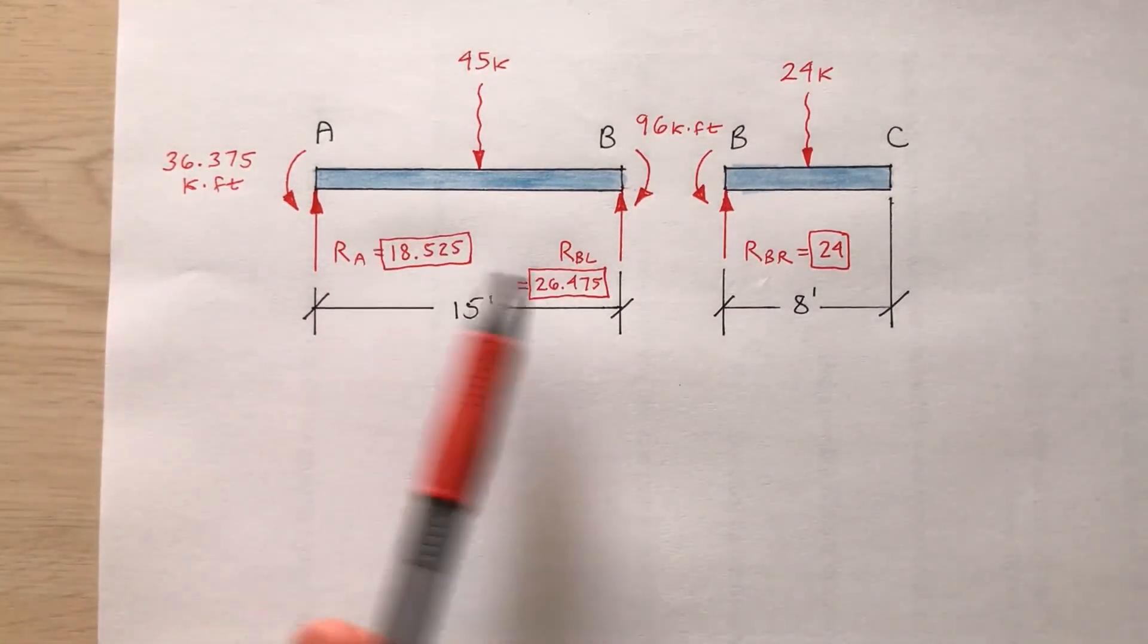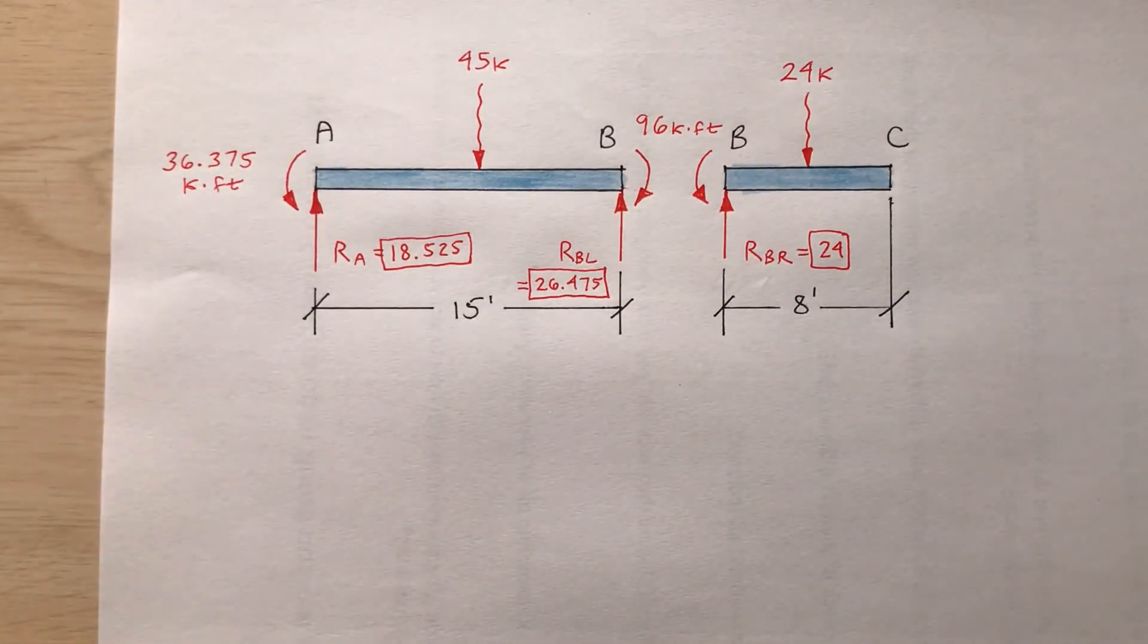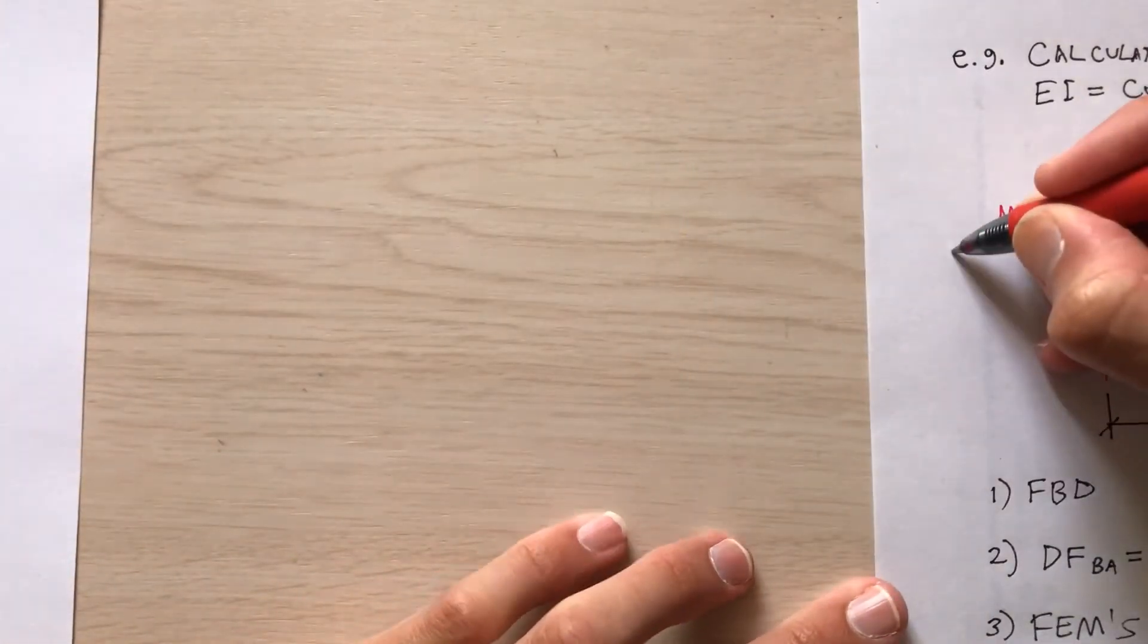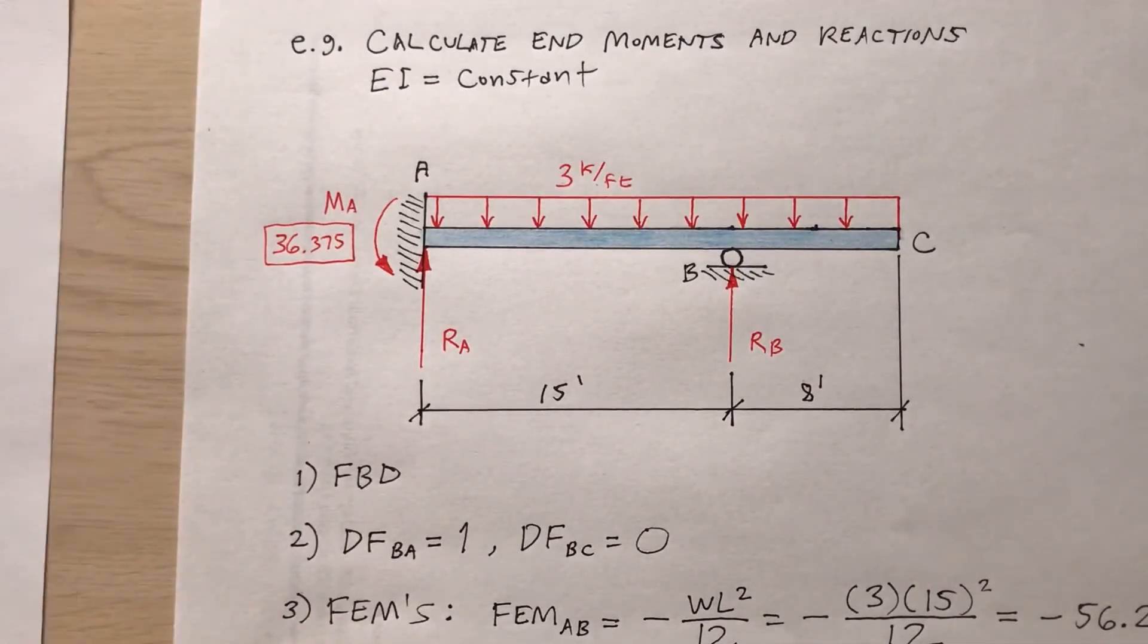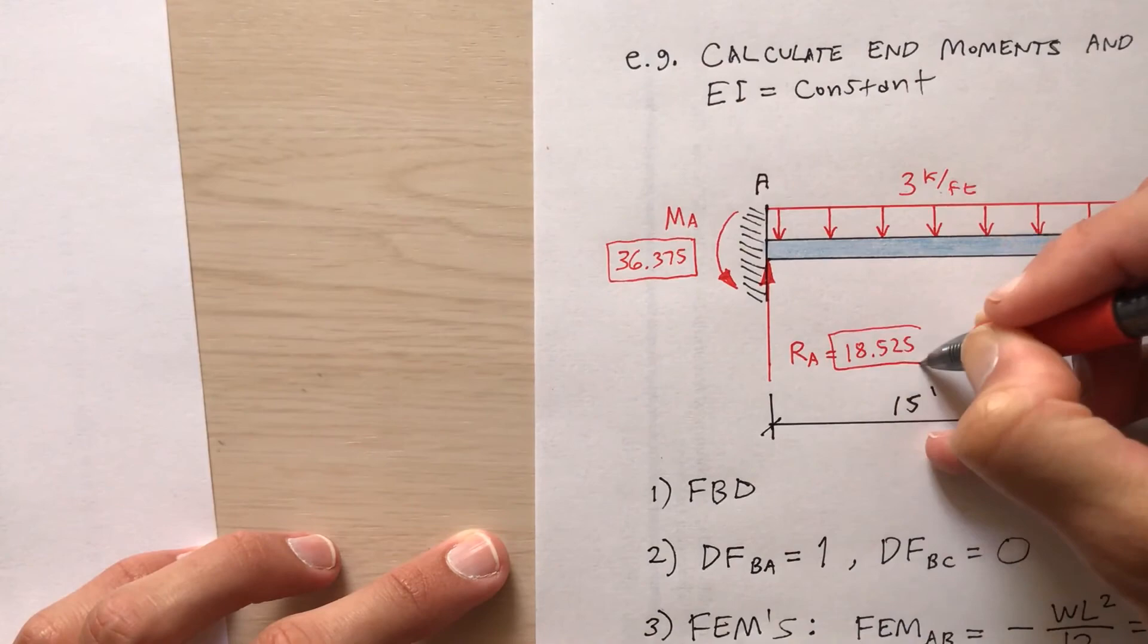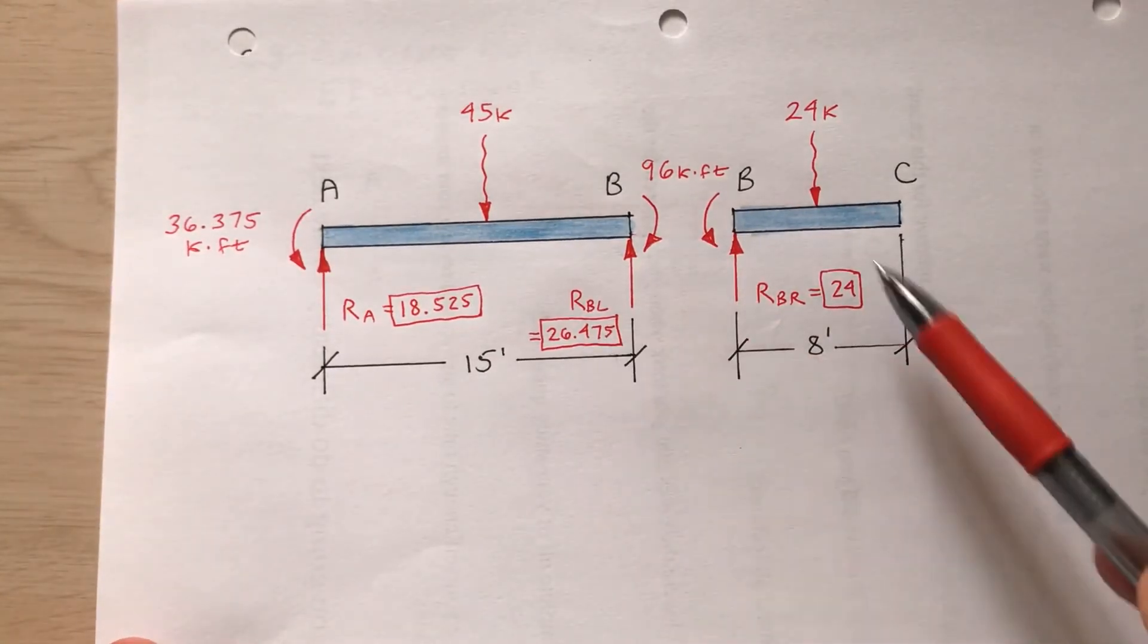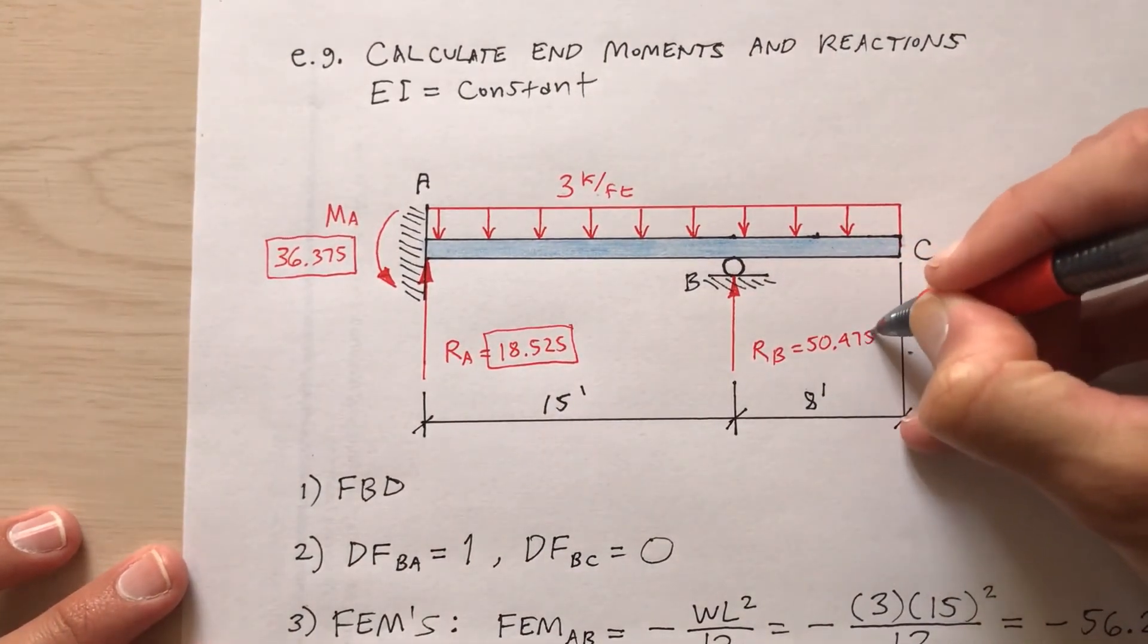Once I find R sub BL, then I'd add whatever that is to 24 to find the reaction at B. So I find the reaction at A, find the reaction at B from the left. Let me go back to my original drawing. So the moment at A, 36.375. The reaction at A, 18.525. The reaction at B, add 26.475 to 24, 50.475.